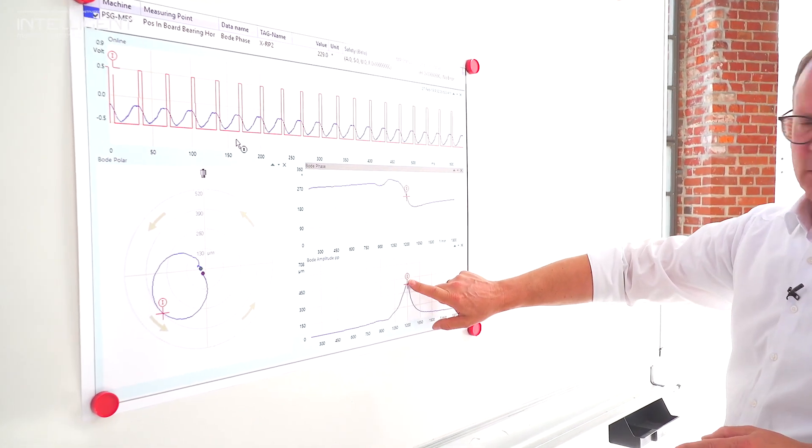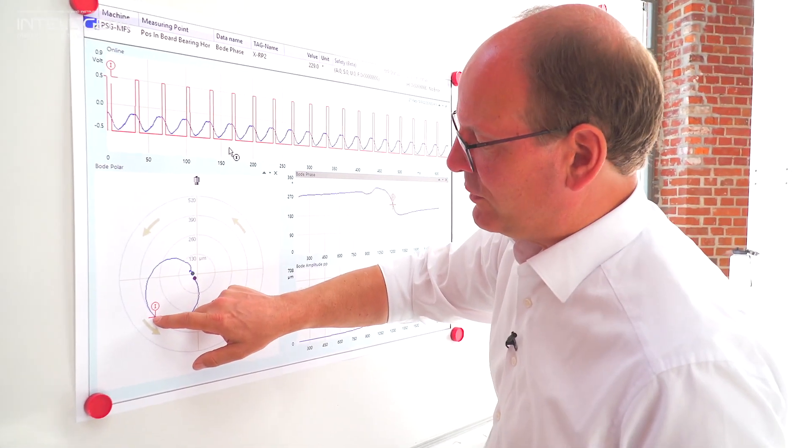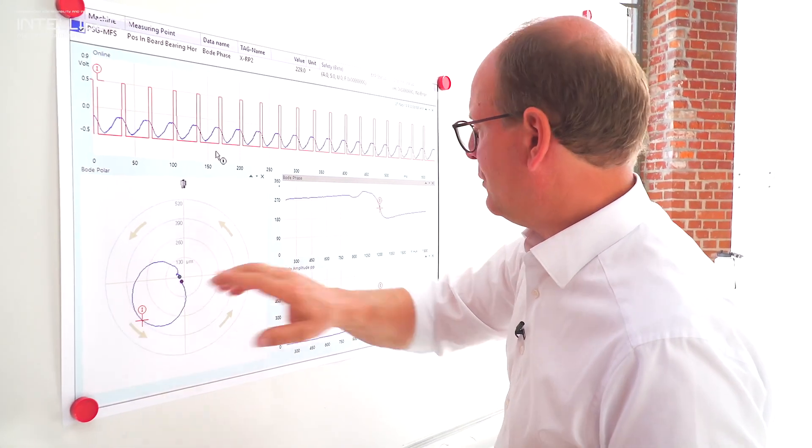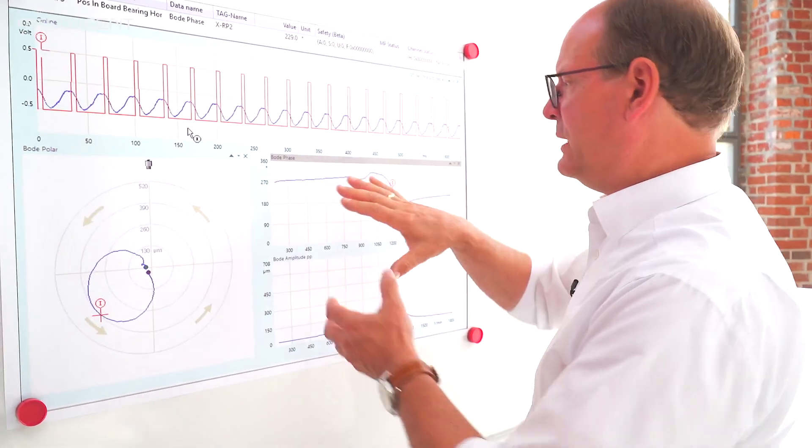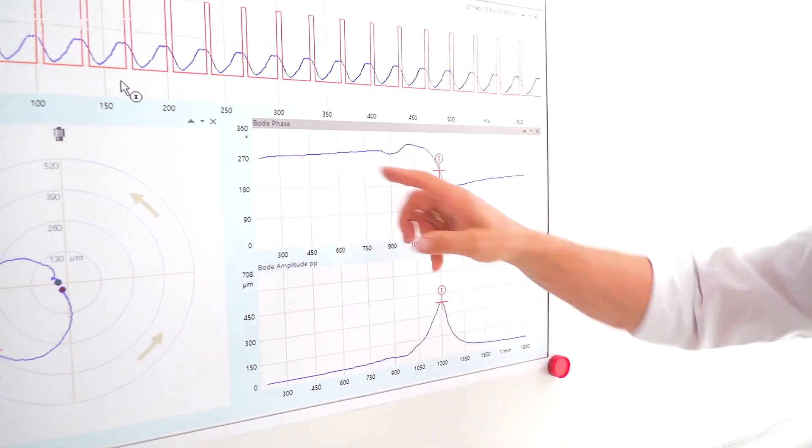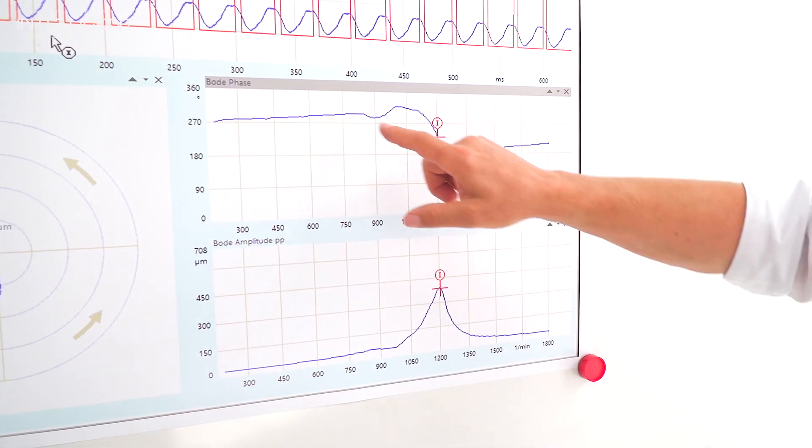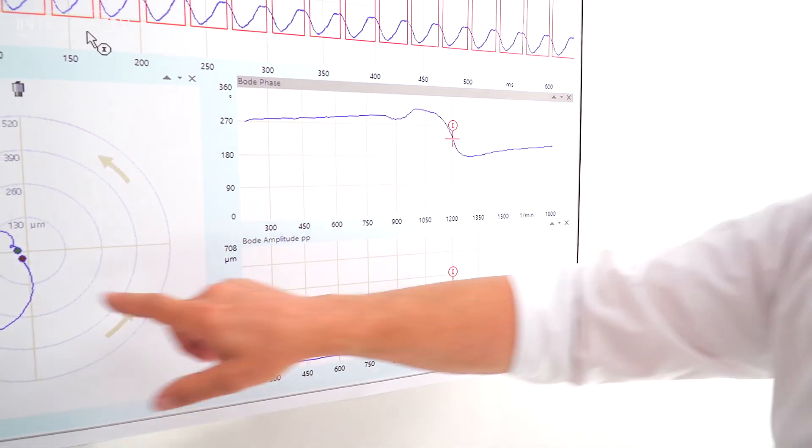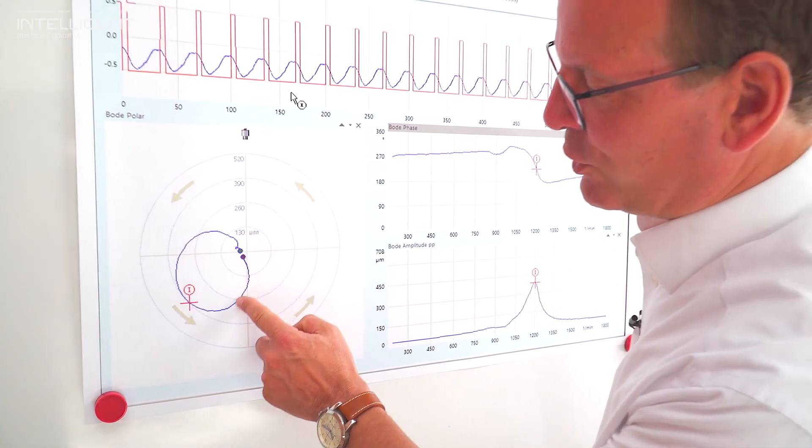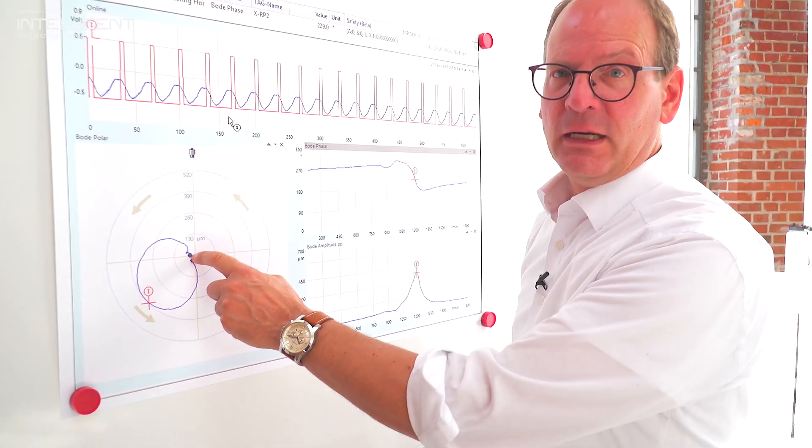This is when we reach the critical speed. Directly after reaching the critical speed by 180 degree we have a phase shift. That means we have a complete change of the phase coming in the other direction. That is what we see here. Here we have an increasing, then it's going back, and then we reach the final speed.